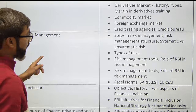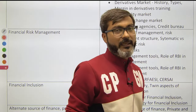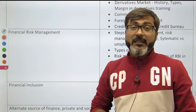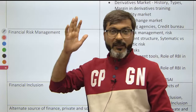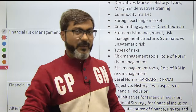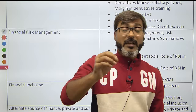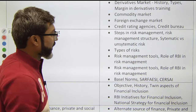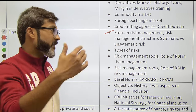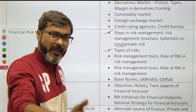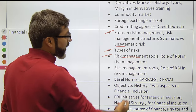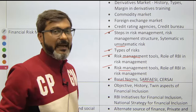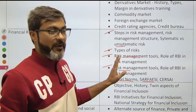The next topic is Financial Risk Management. A common mistake is just reading the syllabus and leaving it — don't do that. The syllabus is one of the most important tools for clearing any examination. Topics to cover: steps in risk management, risk management structure, systematic vs. unsystematic risk, types of risk — credit, rate, market, financial — risk management tools, role of RBI in managing risk, Basel norms, SARFAESI Act, and related provisions.